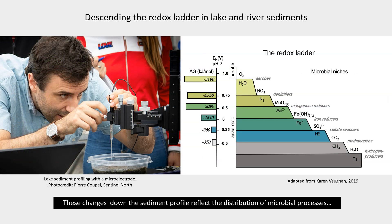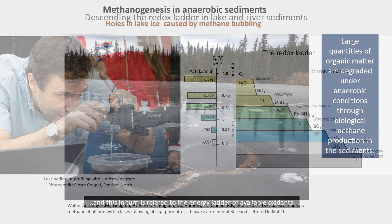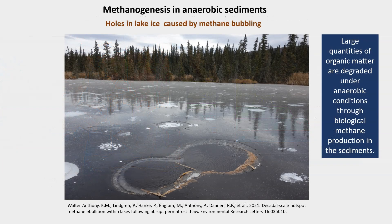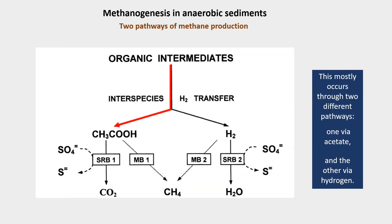These changes down the sediment profile reflect the distribution of microbial processes, which in turn is related to the energy ladder of available oxidants. Large quantities of organic matter are degraded under anaerobic conditions through biological methane production in the sediments, mostly occurring through two different pathways — one via acetate and the other via hydrogen.